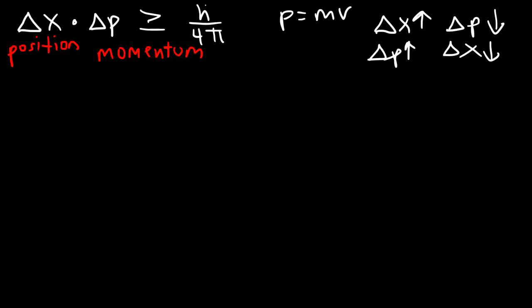Planck's constant h is a very small number — 6.626 times 10 to the minus 34. This tells us that Heisenberg's Uncertainty Principle applies for things that are very small, like an electron or a photon. It doesn't apply significantly for things that are very large, like a soccer ball or a car.